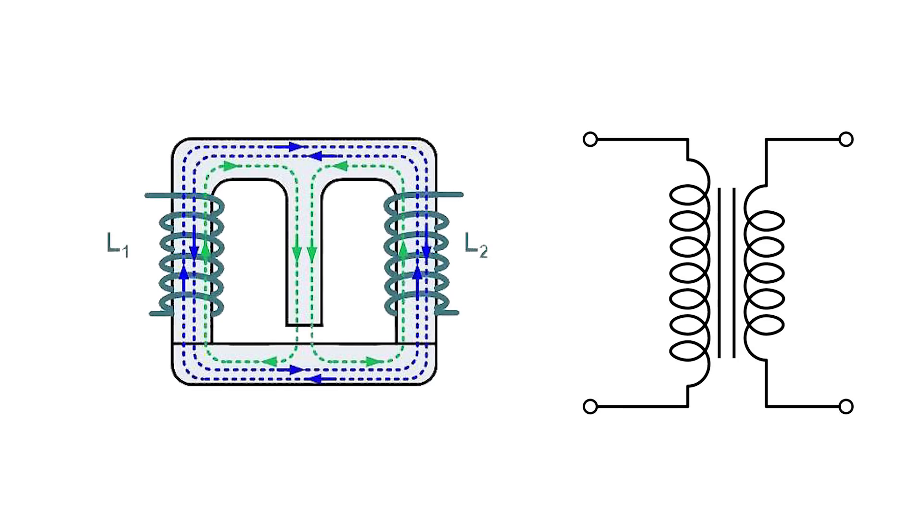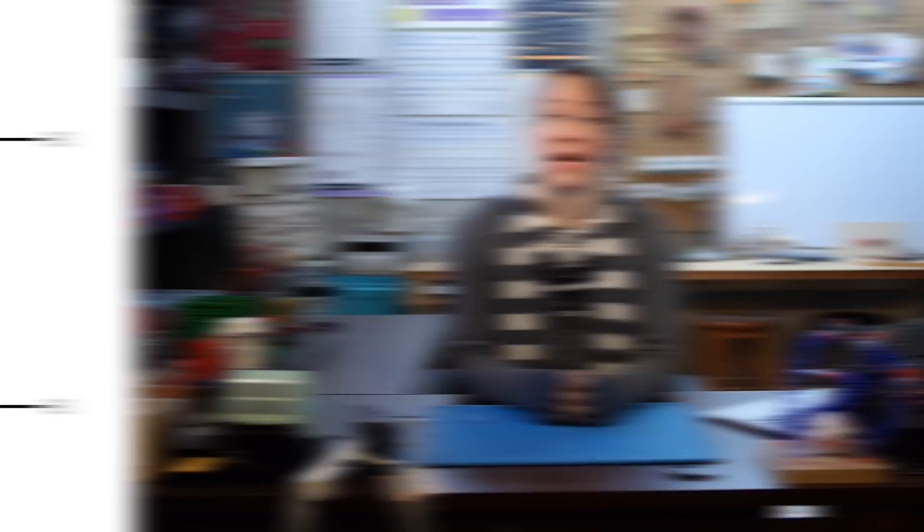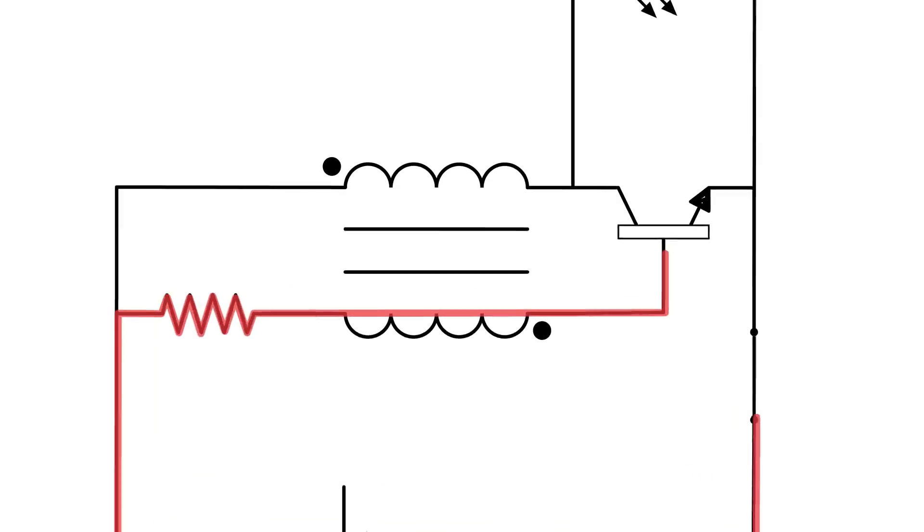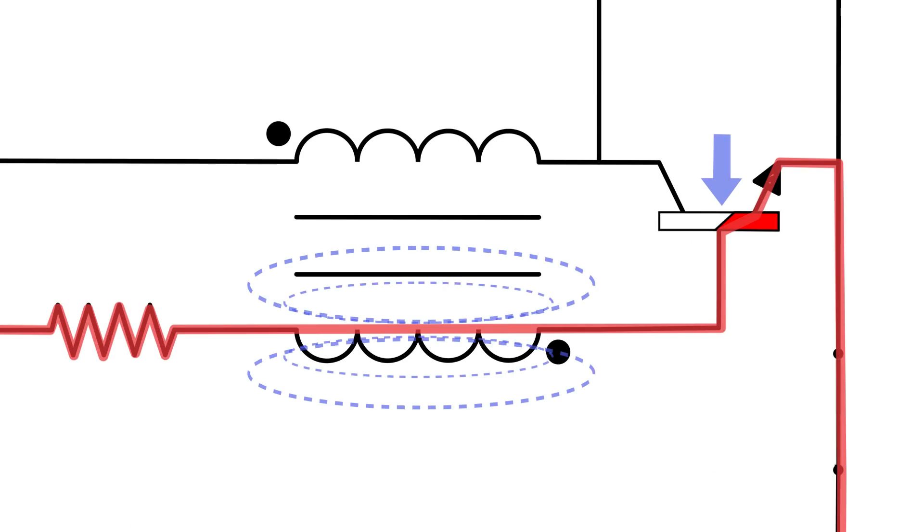Transformers are made of two inductor coils that can transfer energy between them without a metallic connection. Let's look at how the transformer works in our circuit. When the current is first turned on, a small amount of voltage goes to the base of the transistor, partially opening the collector emitter channel.